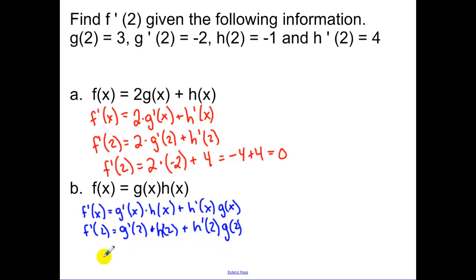So then we want to find f prime of 2. Okay, so let's look and see what we have. So f prime of 2 is going to equal, g prime of 2 is up here, that's negative 2. h of 2, not h prime of 2, h of 2. Now h prime of 2, h prime of 2 is 4. And then g of 2 is 3. So we have that is equal to 2 plus 12, and that is equal to 14.